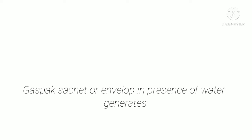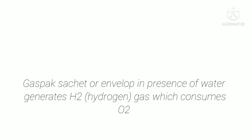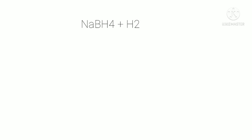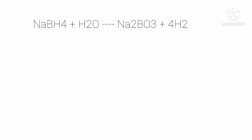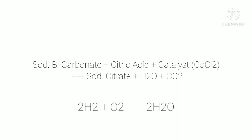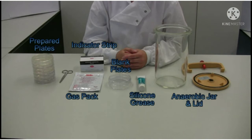A Gas-Pak sachet or envelope, in the presence of water, generates hydrogen gas which consumes oxygen from the surrounding, and is commonly used along with the McIntosh and Fildes jar. It is loaded with sodium borohydride (NaBH₄), which in the presence of water generates sodium metaborate (Na₂BO₃) and four hydrogen molecules. It is also loaded with sodium bicarbonate and citric acid, which react with one another forming CO₂, H₂O, and sodium citrate. This is the setup required for generation of anaerobiasis using the anaerobic jar.